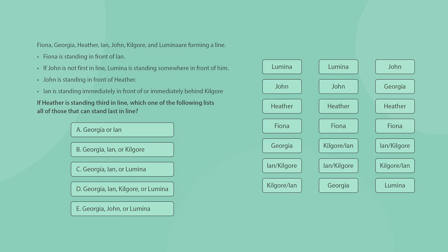Most people will jump right into understanding how the entire line might look like, checking every possible position, and who could stand there. After drawing a sketch of the line, with Heather being third, then we will get to the three possible line formations. Looking at the bottom row, which is the last position in line, we can see that either Georgia, Ian, Kilgore, or Lumina can stand there.